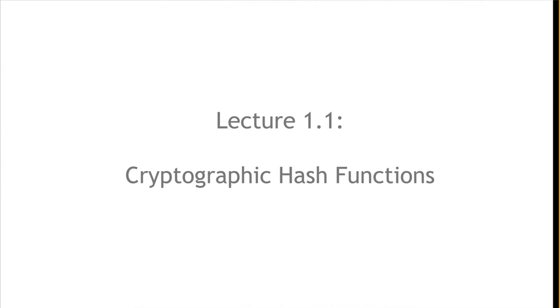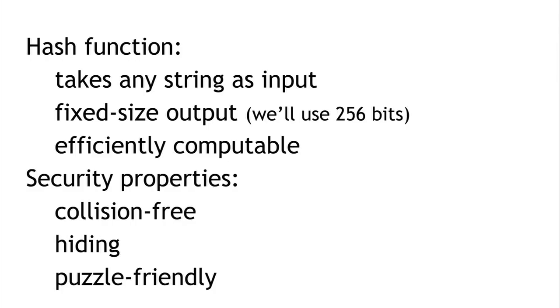In segment 1.1, we're going to talk about cryptographic hash functions — what they are and what their properties are, and then later what their applications are. A cryptographic hash function is a mathematical function with three attributes. First, a hash function can take any string as input, absolutely any string of any size. It produces a fixed-size output — we'll use 256 bits in this series because that's what Bitcoin does. And it has to be efficiently computable: given a string, in a reasonable length of time, you can figure out what the output is.